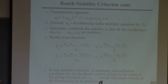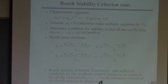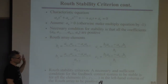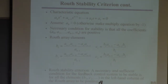Do you guys understand the difference between necessary and sufficient conditions? Necessary means, in this case, if this condition is satisfied, the system might be stable. If it's not satisfied, it's definitely not stable. It can only give you a negative answer — you can verify instability but not stability. So check these coefficients: as long as they're all positive, you keep proceeding. If even one of them is negative, you're done — the system is unstable.